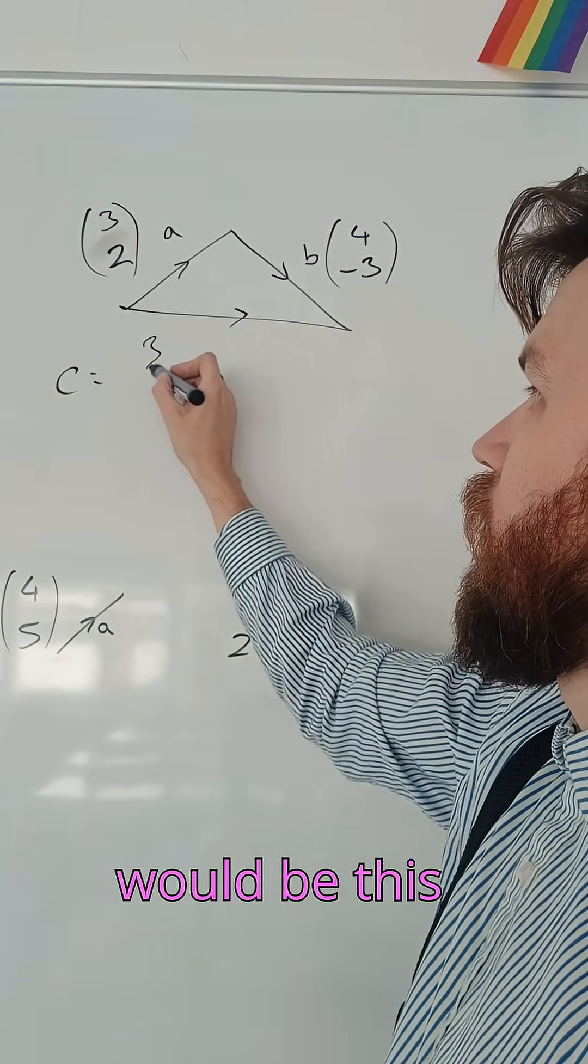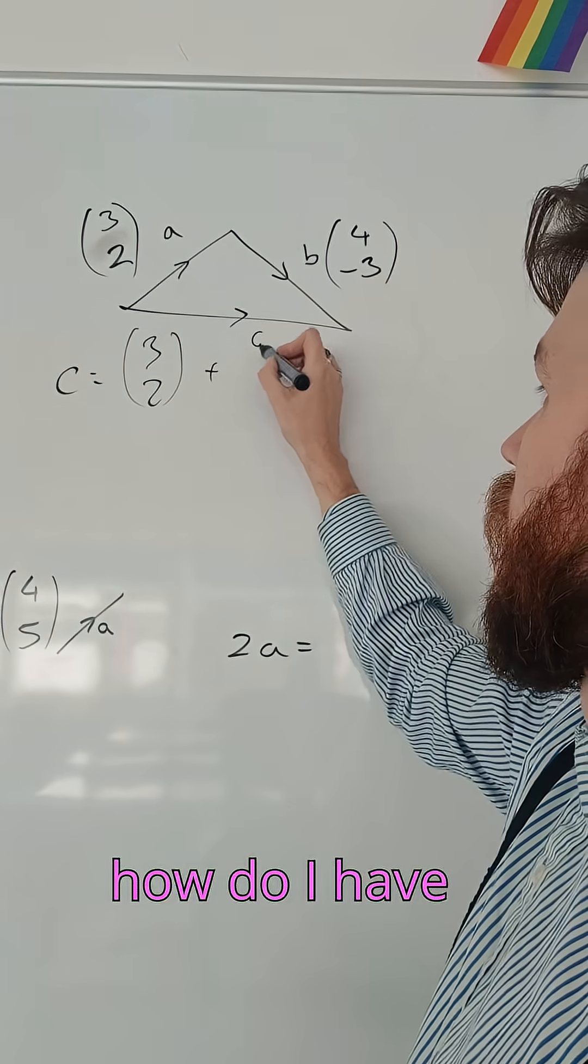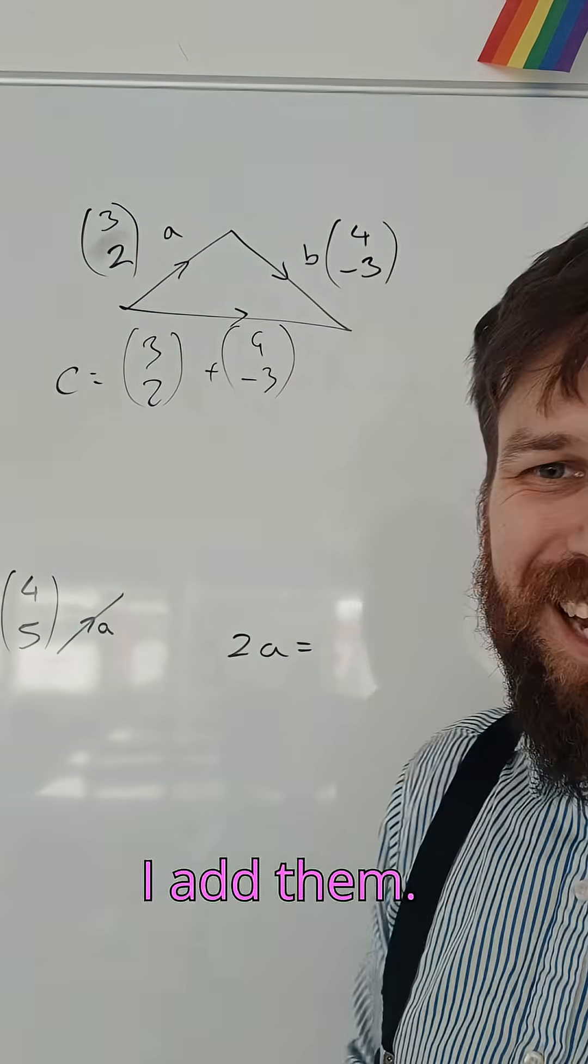C would be this path and then this path. And how do I have one thing and then another? I add them. It's nice and simple.